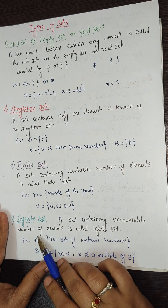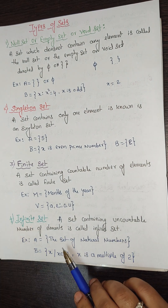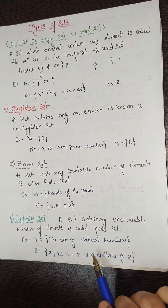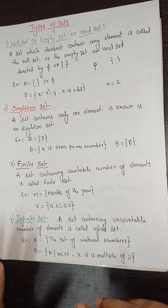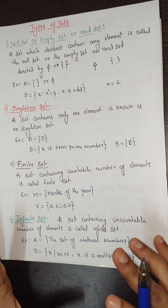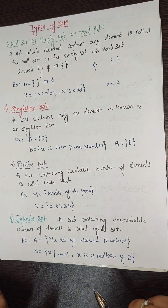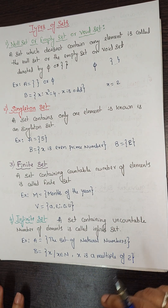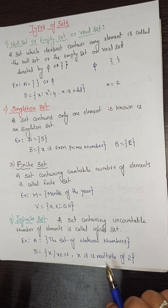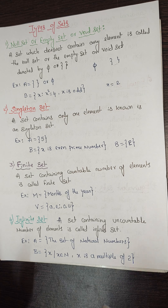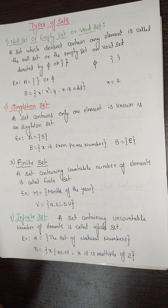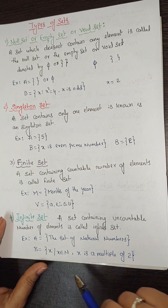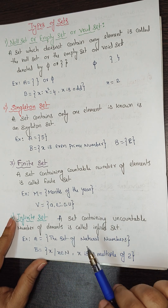Infinite set means a set that contains an uncountable number of elements. For example, A = the set of natural numbers — it starts from 1 and goes 1, 2, 3, 4, 5, ... up to infinity; it is impossible to count. Another example: {x ∈ N | x is a multiple of 2} gives 2, 4, 6, 8, 10, 12, ... — also uncountable, so it is an infinite set.